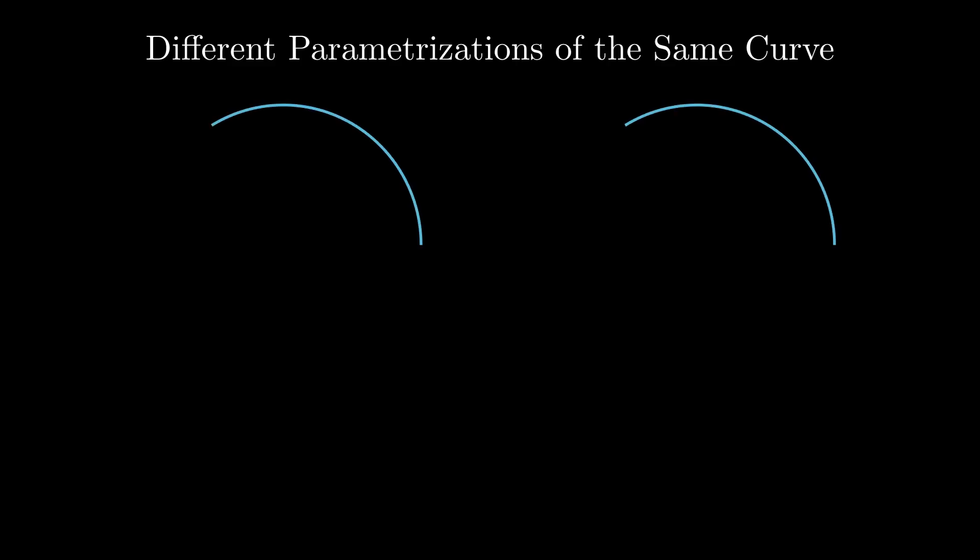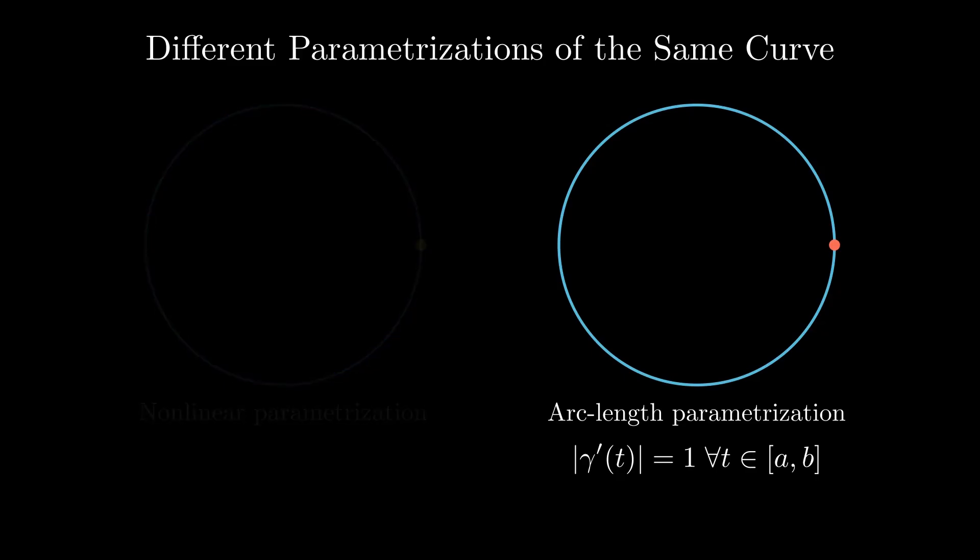A single curve can have many parameterizations, since we can travel along it at different speeds. The simplest case is when we move along the curve at constant speed 1. This is called the arc length parameterization. Given a curve parameterized by arc length, the length of the curve is simply the length of the interval on which the curve is defined.